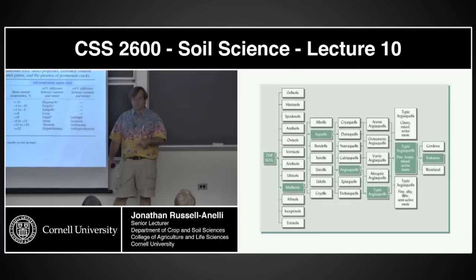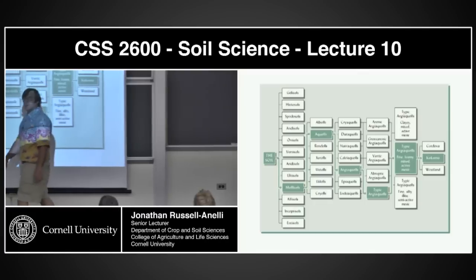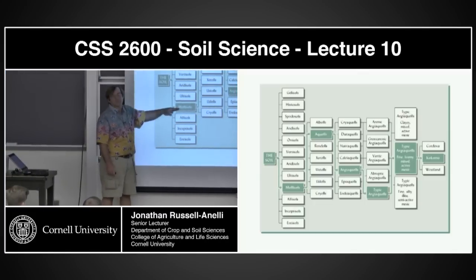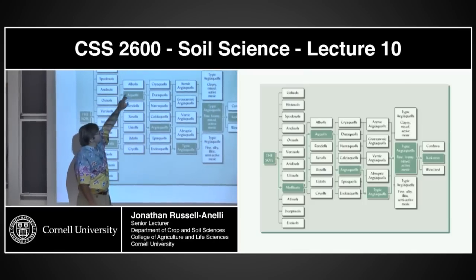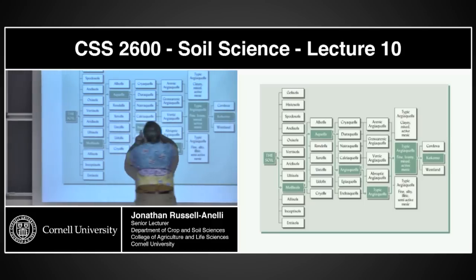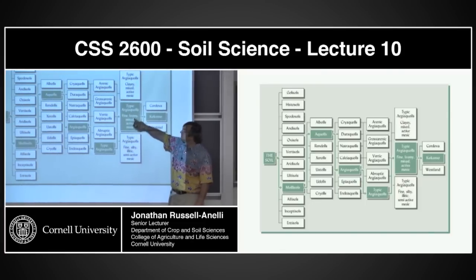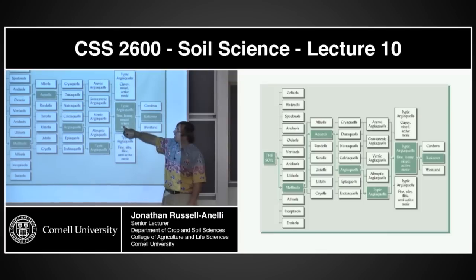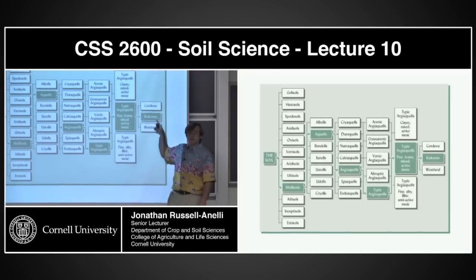If we take a soil and classify it out — Kokomo is a Mollisol. It's a wet Mollisol, so it's an Aquoll. It has an argillic horizon, so it is an Argiaquoll. It is the typical example, so we call it a Typic Argiaquoll. The Kokomo also has a fine loamy texture, mixed mineralogy, active CEC, and lives in a mesic temperature regime — and we call this soil Kokomo.